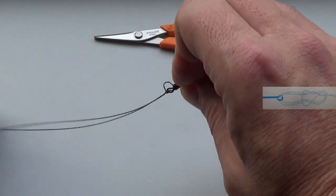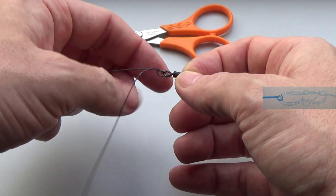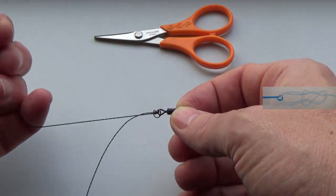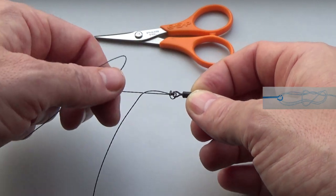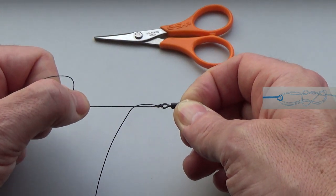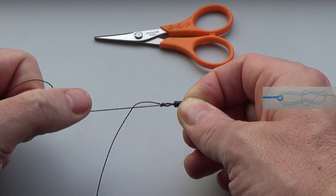That little piece of loop there, you can tighten that down by grabbing the main line. Let the tag go, grab the main line and pull it. There we go.